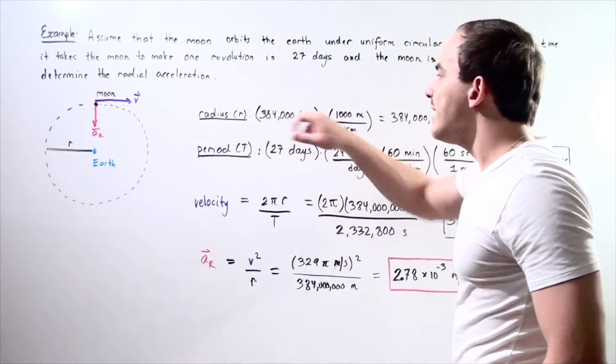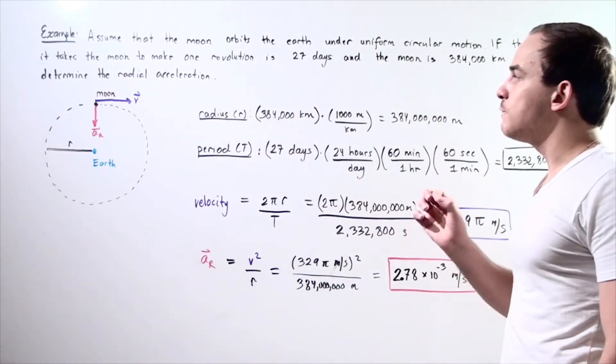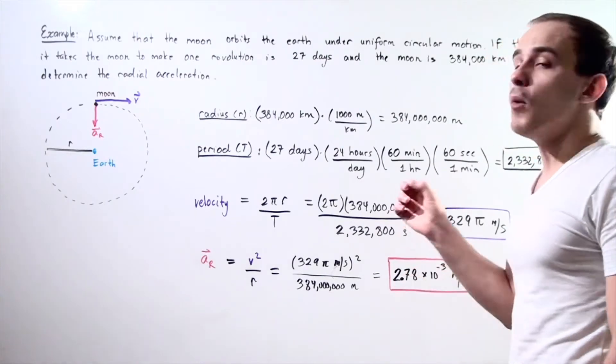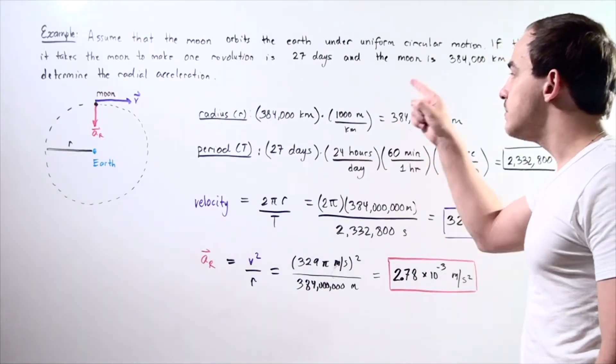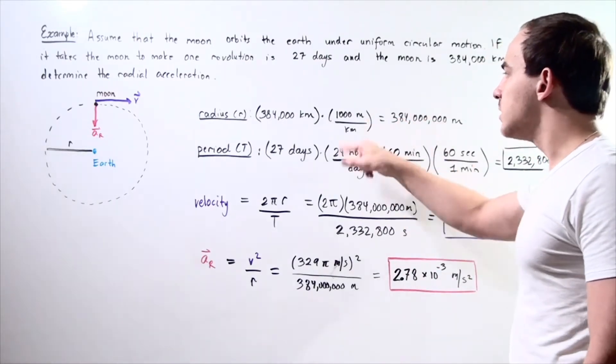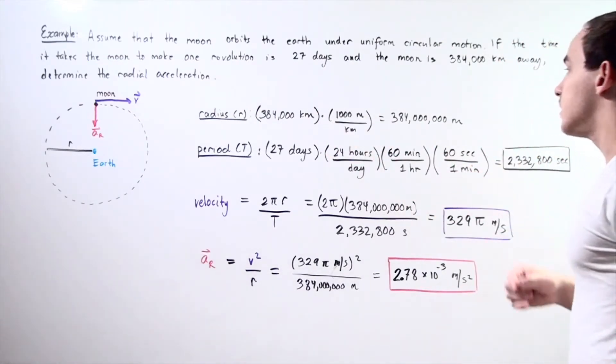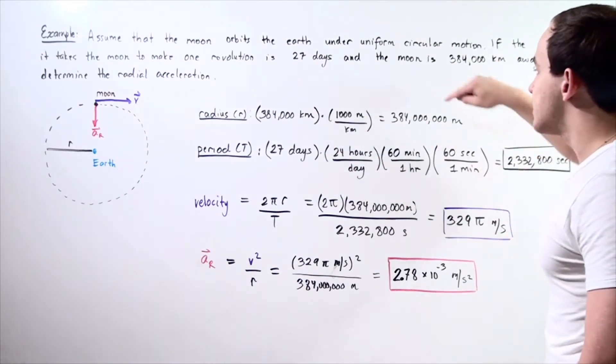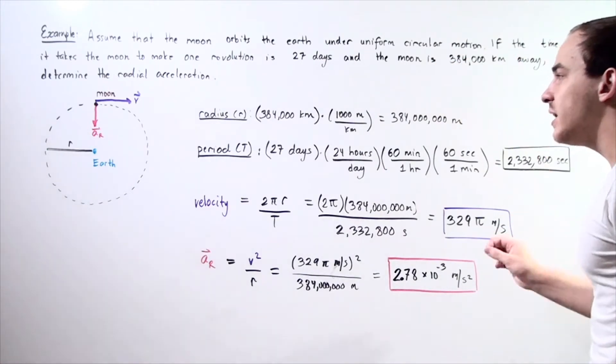Radius. Our radius is 384,000 kilometers multiplied by 1,000 meters in 1 kilometer. Kilometers cancel. And we see that our radius is 384 million meters.